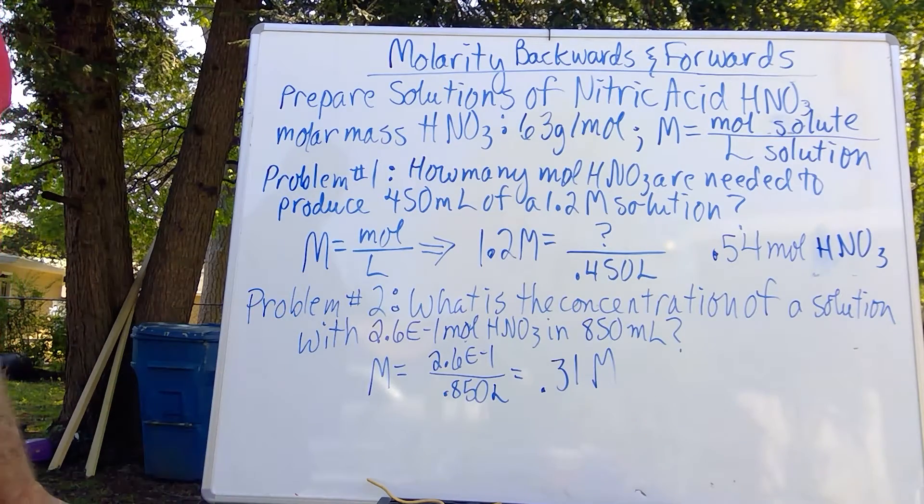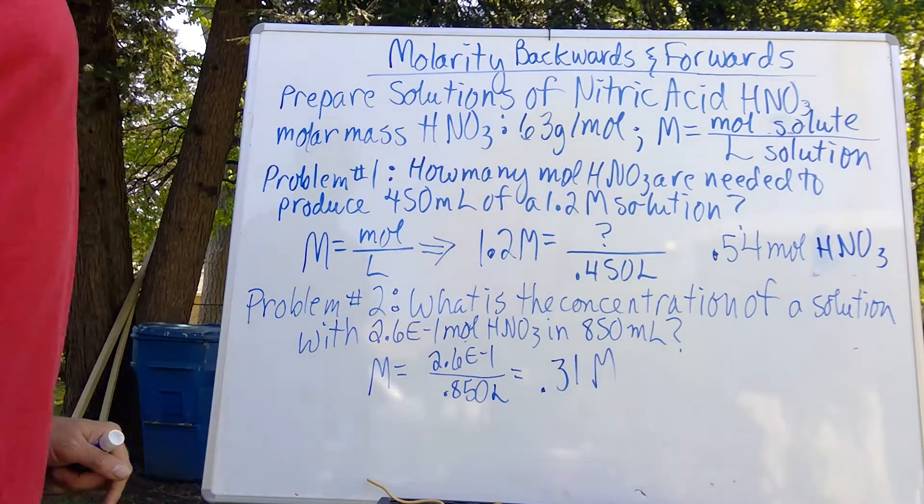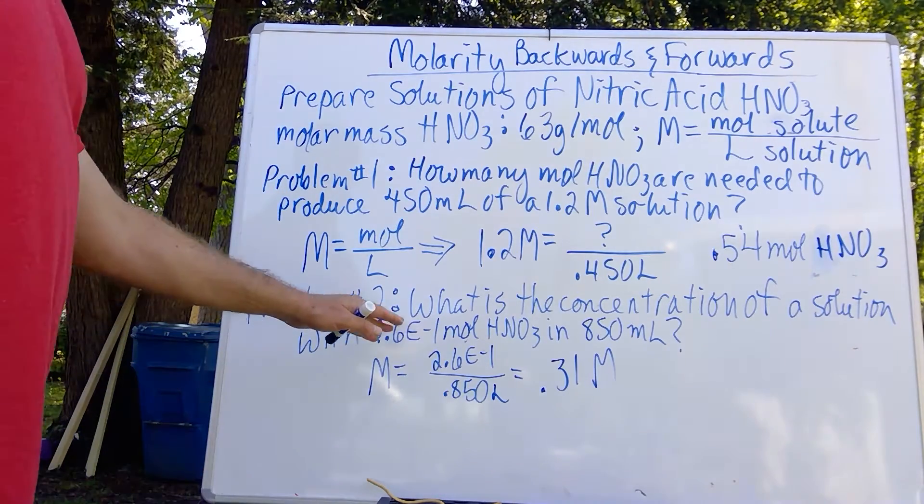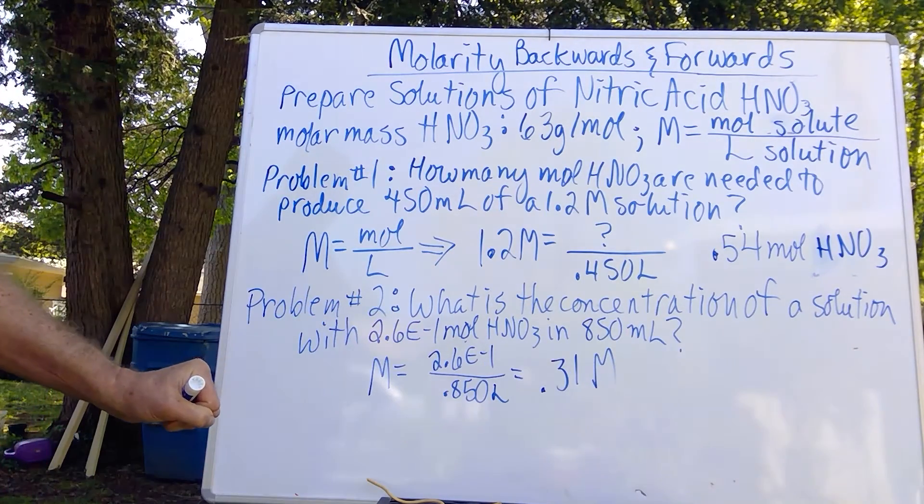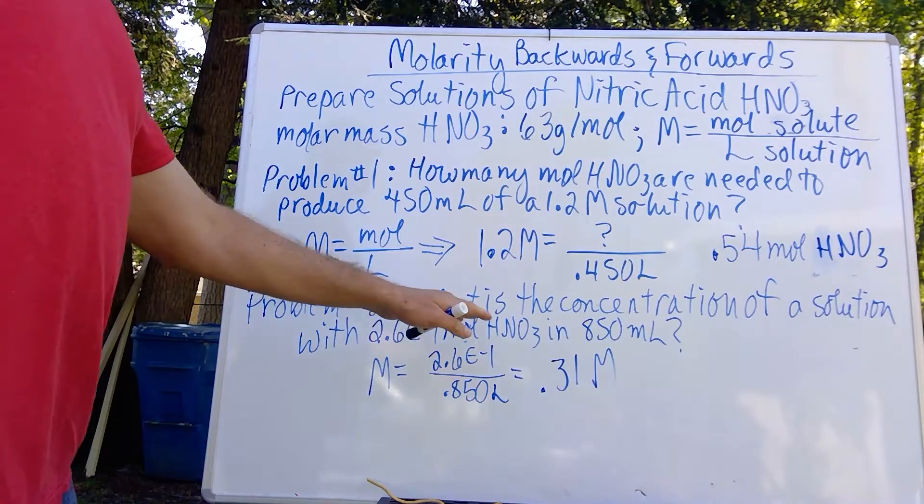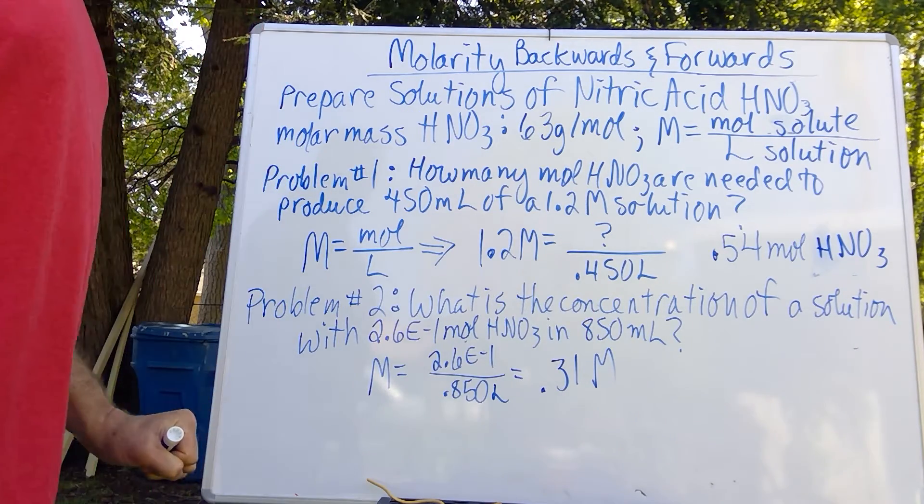Problem number two: what is the concentration of a solution with 2.6 times 10 to the negative first power moles of nitric acid in 850 milliliters?